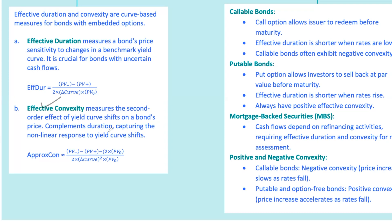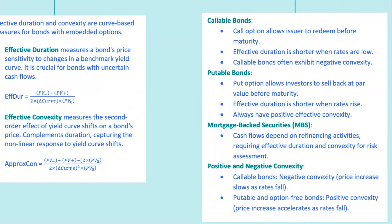Effective convexity complements effective duration by capturing the second-order effect — or the curvature — of yield curve shifts on a bond's price. For bonds with options, effective convexity considers the non-linear response of the bond's price due to those options. This is the formula for effective convexity. Now let's break down how these measures play out for callable bonds, putable bonds, and even mortgage-backed securities (MBS).